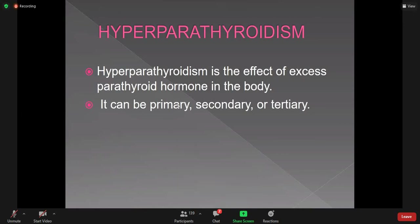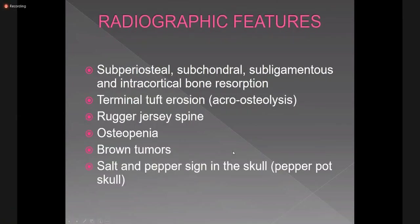The radiographic features of hyperparathyroidism: the hallmark is bone resorption, which is seen subperiosteally, subchondrally, subligamentally, and as intracortical bone resorption. There will be terminal tuft erosion — acroosteolysis — which is resorption of the distal phalanges. Rugger jersey spine is also noted, along with osteopenia, brown tumors, and salt and pepper sign in the skull — also called pepper pot skull.